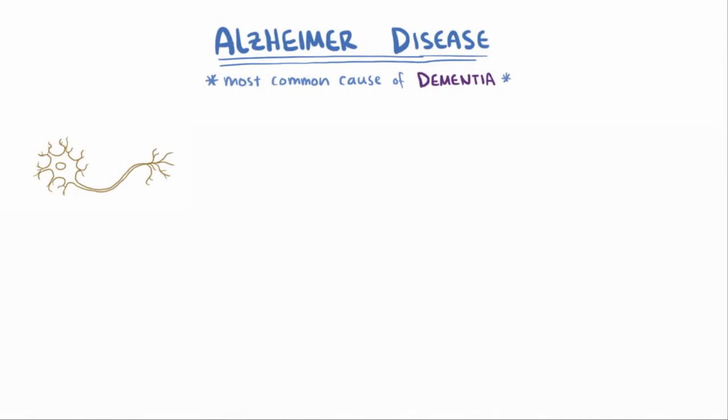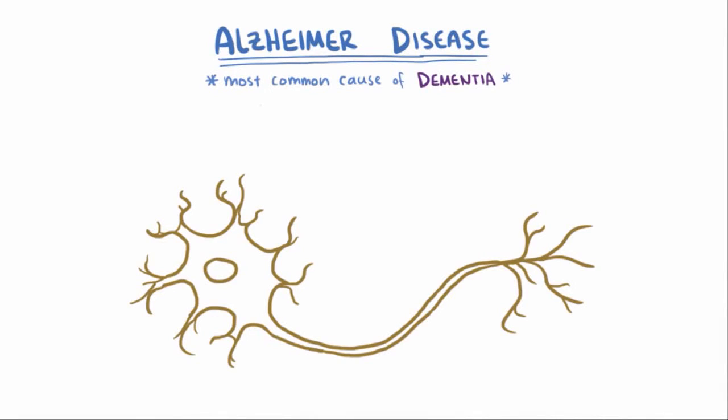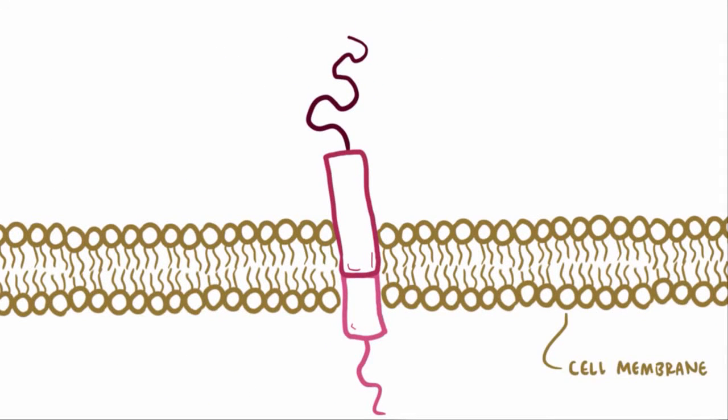Although the cause of Alzheimer's disease isn't completely understood, two major players that are often cited in its progression are plaques and tangles. So here we've got this cell membrane of a neuron in the brain. In the membrane you've got this molecule called amyloid precursor protein, or APP.